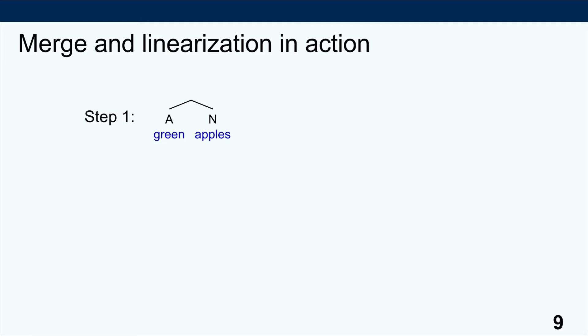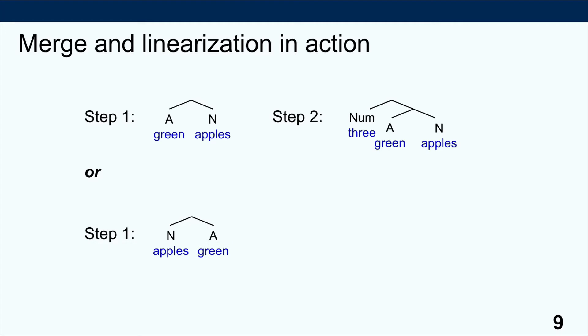Let's see how merge with different linearization can build various phrases. Step one: combining 'green' and 'apples' with the adjective on the left gives 'green apples.' Step two: adding numeral 'three' to the left gives 'three green apples.' For a different order, insert 'green' to the right of 'apples' giving 'apples green', then insert the numeral to the right giving 'apples green three.' So we can produce the opposite linear order even though we combine items in the same sequence and build the same hierarchical structure — just swung the opposite way around. And we can keep doing that, putting one item left, one item right, to build quite a few orders.